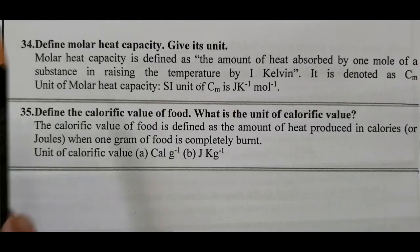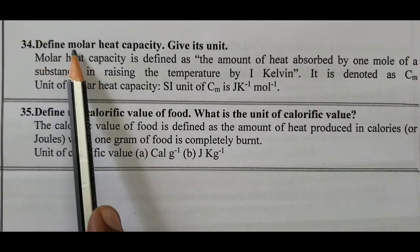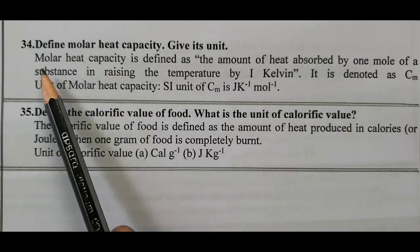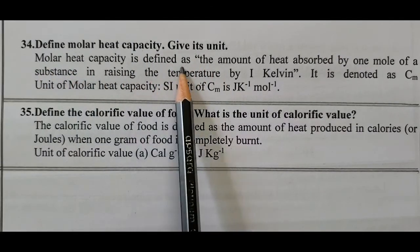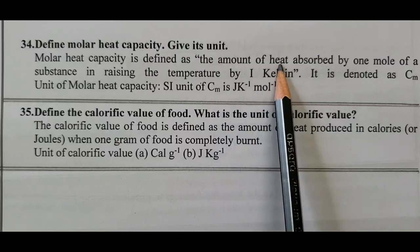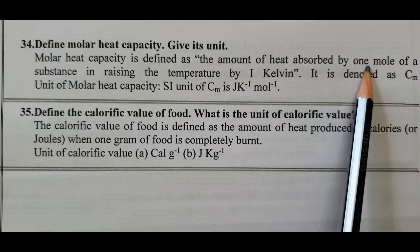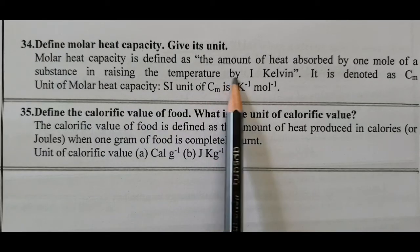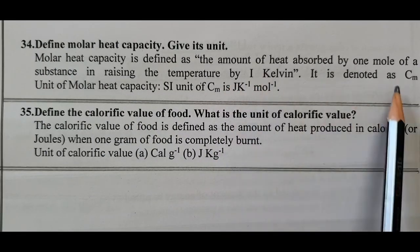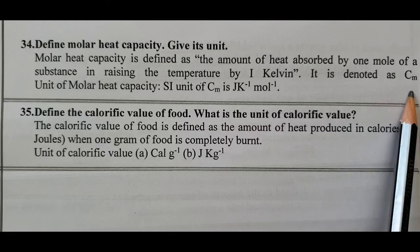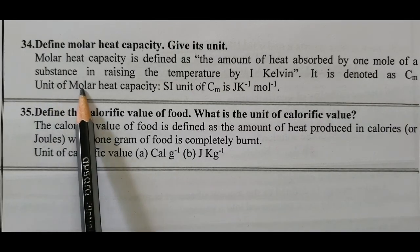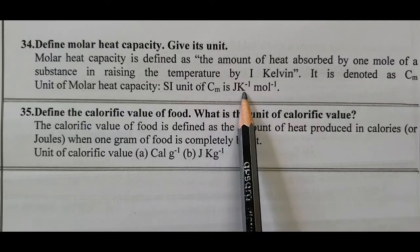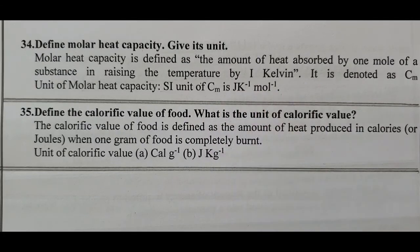Question number 34: Define molar heat capacity and give its unit. Molar heat capacity is defined as the amount of heat absorbed by one mole of a substance in raising the temperature by one kelvin. It is denoted as Cm. The SI unit of molar heat capacity is joule kelvin to the power minus one mole to the power minus one (J·K⁻¹·mol⁻¹).